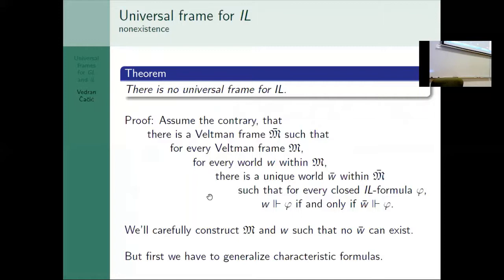The biggest surprise, at least for me, was that I tried to find the universal frame for IL. There is no such thing. There cannot be a universal frame for IL. Assume the contrary that there is a frame such that for every frame and for every world within that frame, there is a unique world within this first frame such that those are modally equivalent. How we will get a contradiction? We will carefully construct such M and a world within it such that it cannot have a representant.